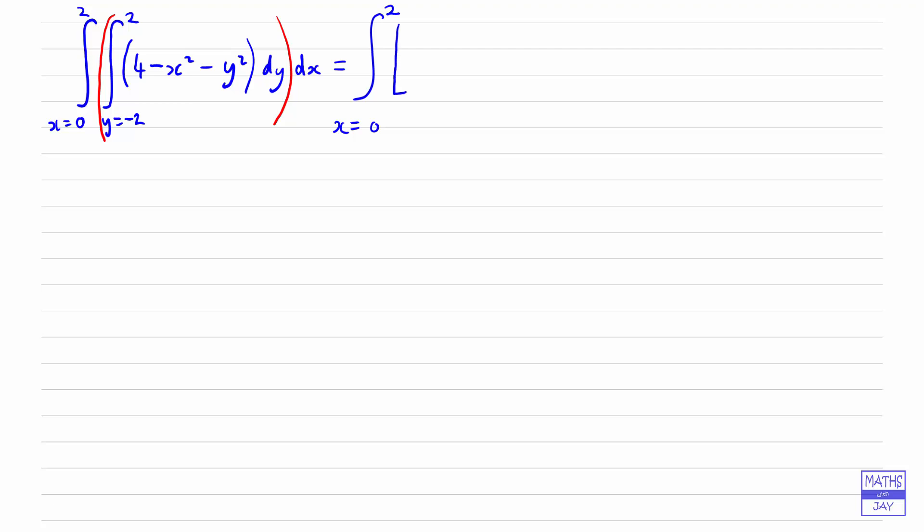So to start with we're integrating 4. So integrating a constant, straightforward. We multiply 4 by y because we're integrating with respect to y. Then we've got to look at the minus x squared. So x squared is just like a constant. So when we're integrating with respect to y, we're just going to get x squared y. The next part is straightforward. Integrating y squared with respect to y will be y cubed over 3.